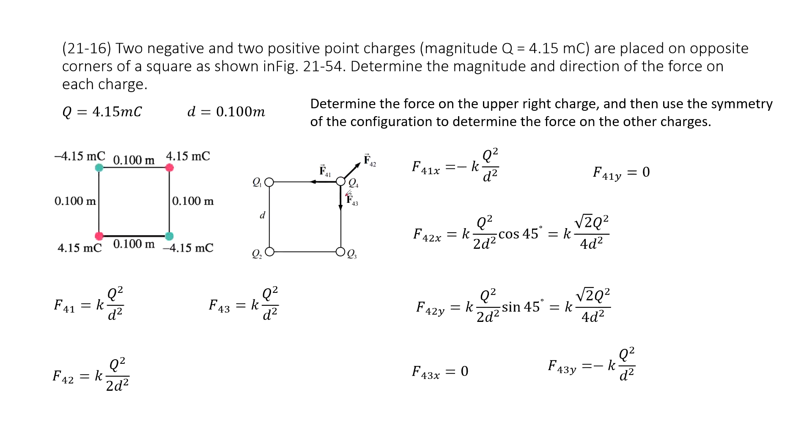Now we look at particle 2 with particle 4. This is positive, this is positive. So the repulsive force points at 45 degrees with horizontal. The magnitude of this force is k times q squared divided by r squared. The r is square root 2d, so the distance squared is 2d squared. Then we look at particle 3 with particle 4. This is attractive force pointing down. The magnitude is k times q squared over d squared.